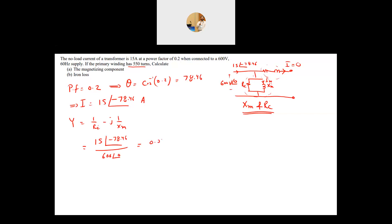This will give me 0.025 angle of minus 78.46, and this I convert from polar to rectangular, equal to 0.005 minus j 0.0245, and the unit is siemens.